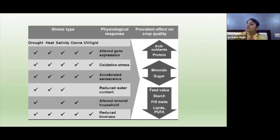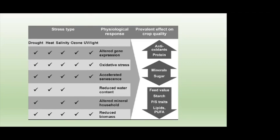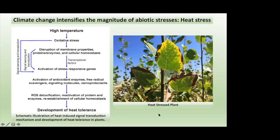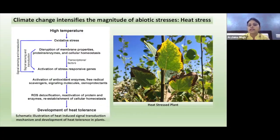At the same time, protein and antioxidant concentration tend to increase, whereas no clear trend can be detected in sugar and mineral concentration. The increasing number of extreme climate-related events occurring during 1990 to 2016 indicates more incidences of drought, flood, high temperature, and storms, the main reason being climate change. We will now focus on a few important abiotic stresses individually.